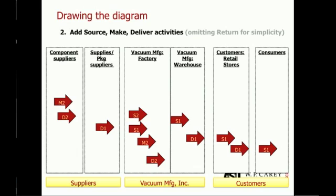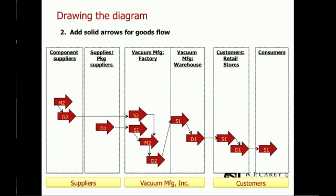In the warehouse, products are being treated as stocked, and similarly at the retail store, they're stocking the goods. After identifying the source, make, and deliver activities, we use solid arrows to show the physical goods flow throughout the supply chain, linking together across the different entities. It should become clear that a deliver from one entity is associated with the source of the entity that's downstream of it.